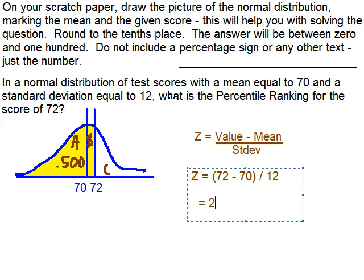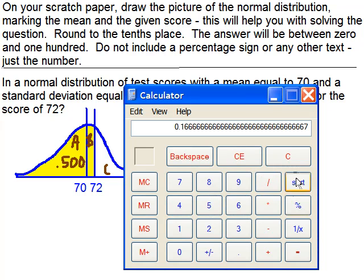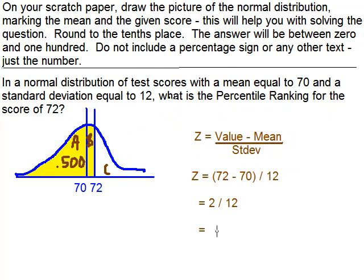Okay, so that gets us 2 divided by 12. And then we bring out our handy-dandy calculator. And I'll redo this, here we go, 2 divided by 12. And that gets us .166, etc. Or we can round to 0.17. That being at the hundredths place.